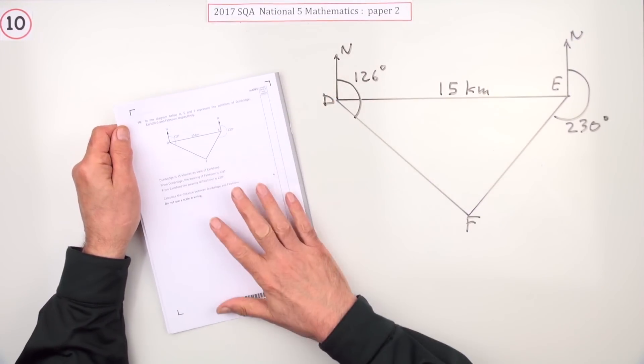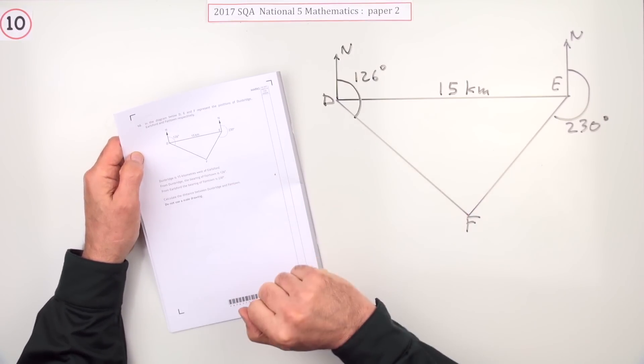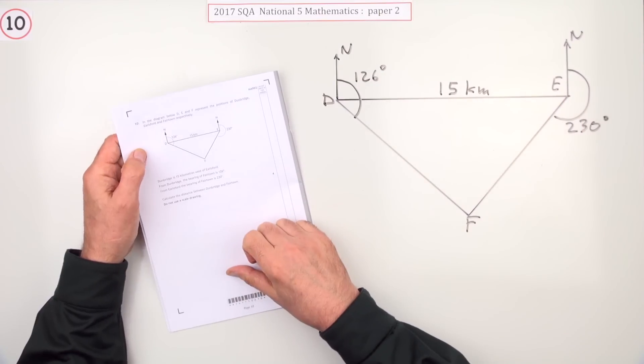Number 10 then from paper 2 of the 2017 National 5 Maths. What have we got here? A triangle again, but it's not a right angle triangle. It'll be a scalene triangle, so it's a sine rule or cosine rule question.